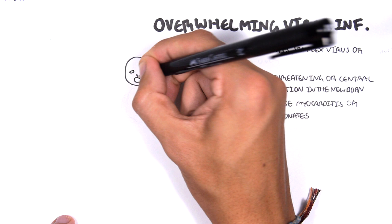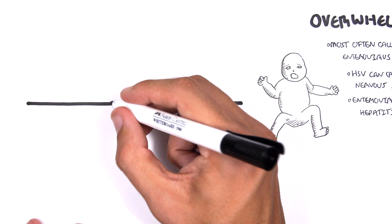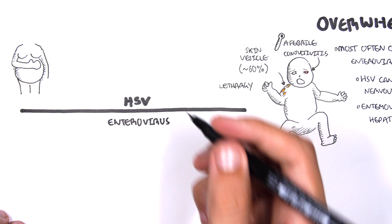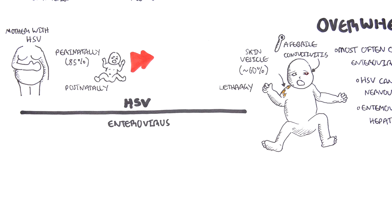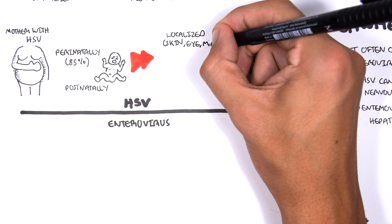Let's begin by looking at the herpes simplex virus. The signs and symptoms include lethargy, formation of skin vesicles in about 60% of cases. They're often afebrile and may have conjunctivitis. Risk factors include having a mother with herpes simplex virus prenatally or perinatally in 80% of cases or postnatally. These risk factors can lead to a herpes simplex virus infection, which can cause localized skin infection, mouth infection, plus or minus CNS involvement, and/or disseminated disease leading to overwhelming viral infection.